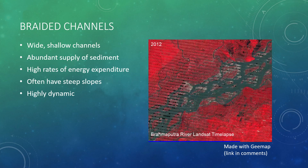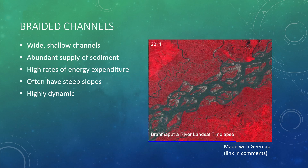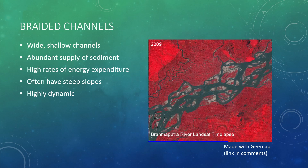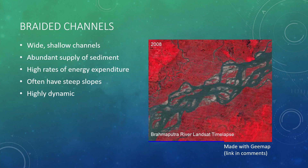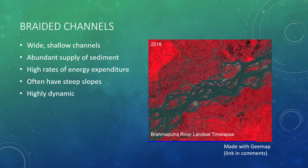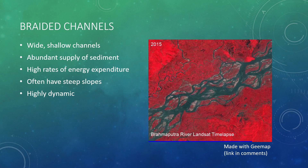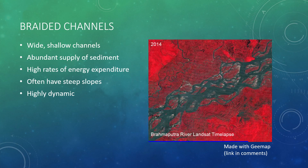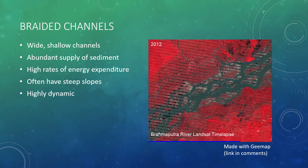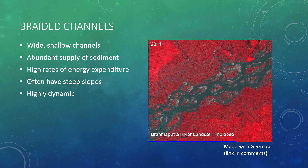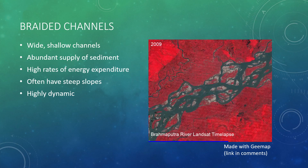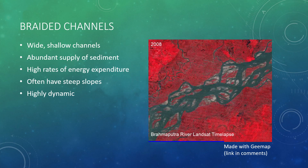Braided channels are characterized by a high density of wide, relatively shallow channels. Their formation is driven by the abundance of sediments, and they often are located on the edge of glaciers or in mountainous areas with high rates of slope failure feeding sediment to the stream. Braided streams exhibit high rates of energy expenditure, often have steeper slopes, and are highly dynamic. The GIF on the right is from the Brahmaputra River in India. This 30-year time span shows just how incredibly dynamic these braided systems can be, with change apparent throughout the entire GIF. We can also see lots of bright areas surrounding the channel signifying exposed sand, hinting at the high sediment load.